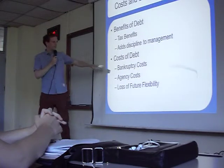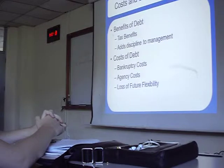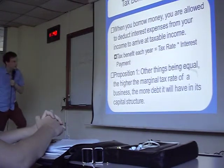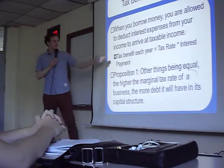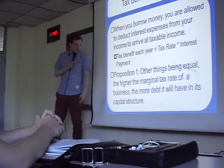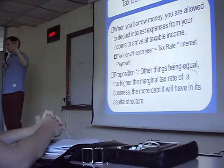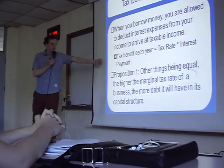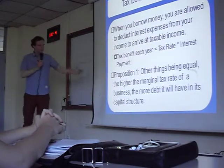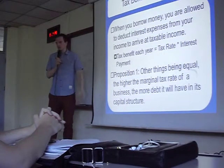Then cost of debt - we have bankruptcy cost, agency cost, and the loss of flexibility. In the bankruptcy, the debt holder will get control. So the first one is the tax benefits. When you borrow money, you can deduct the interest expense from your income to arrive at the taxable income. We said that the tax benefit each year is the tax rate multiplied by the interest payment. How much interest are we paying? Then we can deduct that money from our profit. We're paying 23% or 30% tax on our profit.